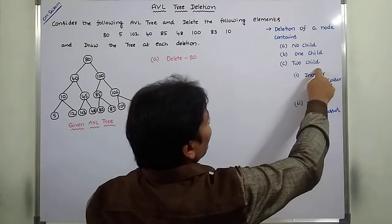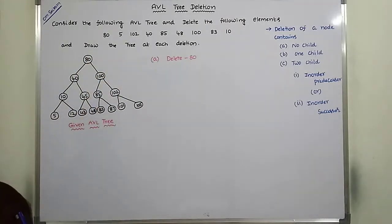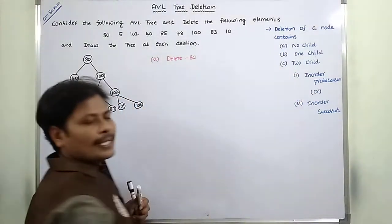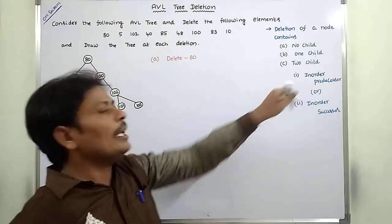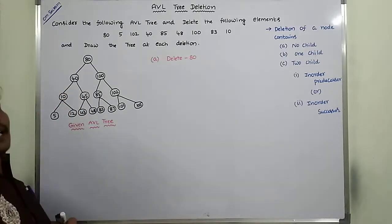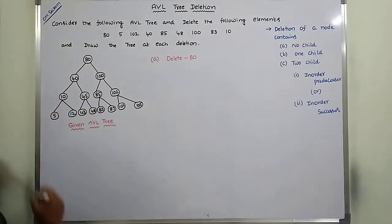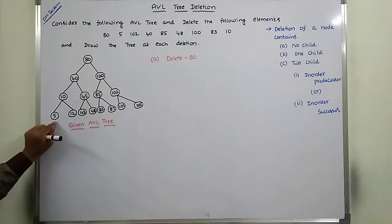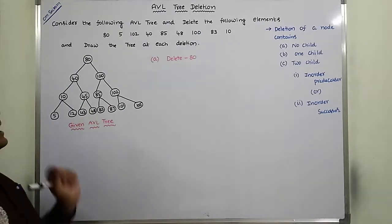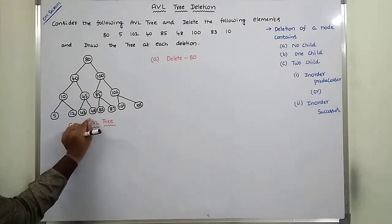Since the deleted node 80 has two children — left child 40 and right child 100 — that deleted node can be replaced with either the in-order predecessor or the in-order successor. I am considering the in-order predecessor. The in-order predecessor of node 80 is the maximum element in the left subtree. The elements in the left subtree are: 40, 10, 45, 5, 12, 43, 48. Among all these elements, 48 is the maximum. So we have to replace 80 with 48.